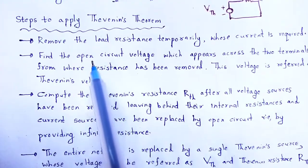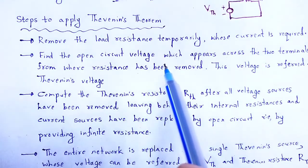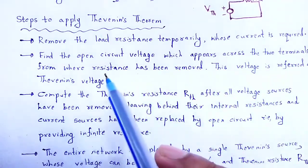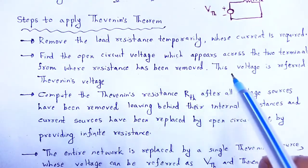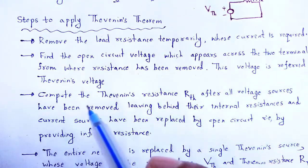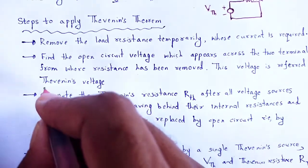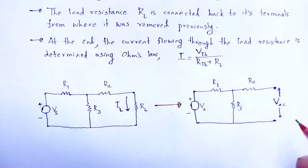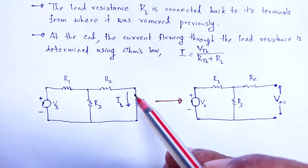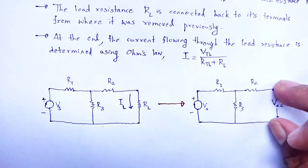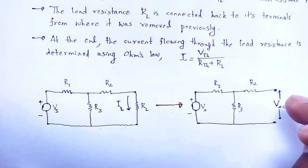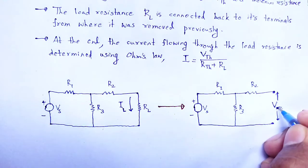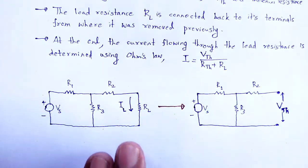Now find the open circuit voltage which appears across the two terminals from where the load resistance has been removed, and this voltage is referred to as the Thevenin voltage. Here, we remove that load resistance and at the terminals we calculate the voltage, and that voltage is known as Thevenin voltage, Vth.